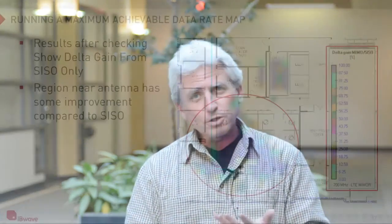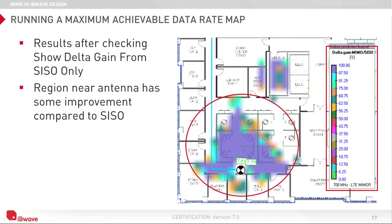Once we have seen how we model that in IBWave Design, we then look at what we call data throughput maps. We also have that available for MIMO, and we will see in IBWave Design how we handle all of that. So: capacity, MIMO.